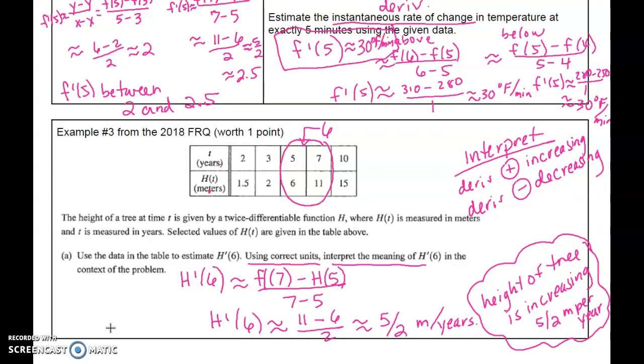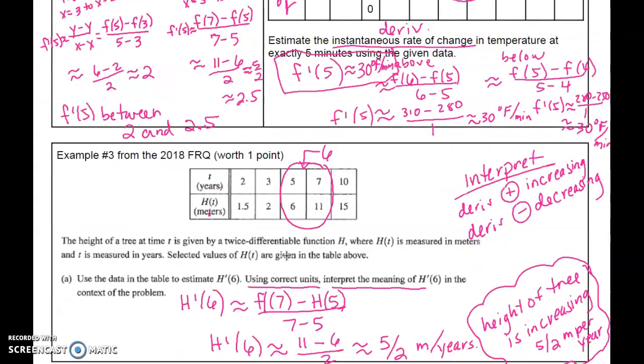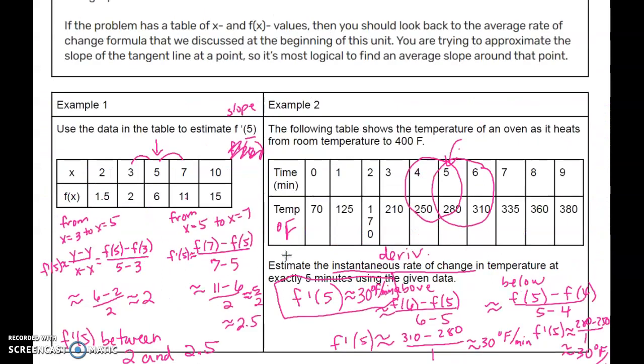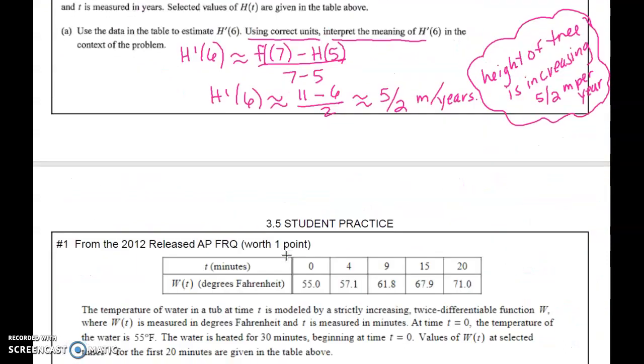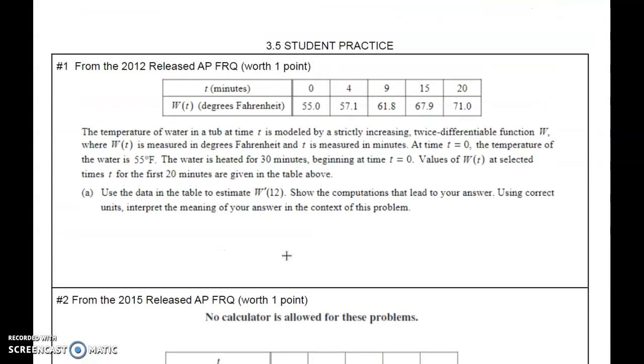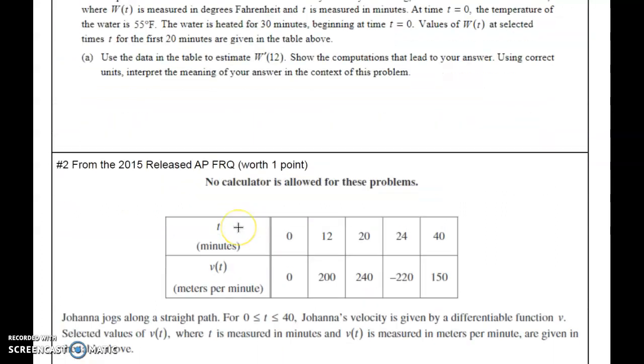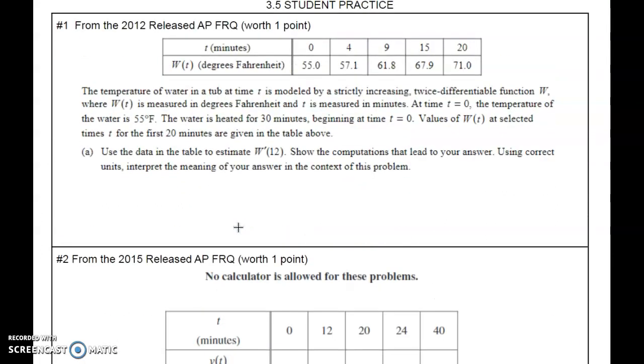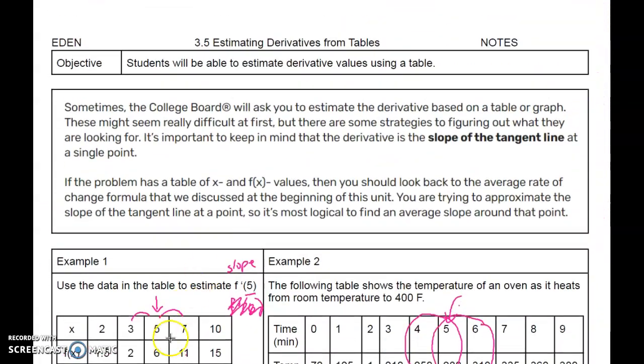So use words like decreasing and increasing to make it really obvious. It's a really quick thing, but it shows up every year on a free response question, and you don't really learn this in a textbook. So I wanted to make sure this section was explicitly taught. I give you three questions yourself to do. These are really from free response questions. Go ahead and give those a try. Good luck.